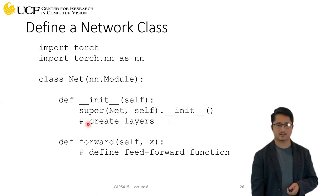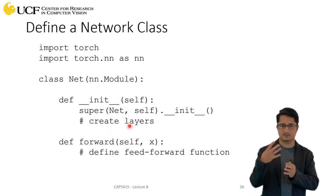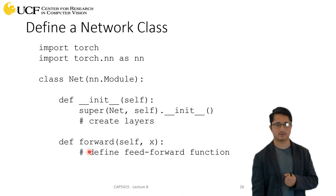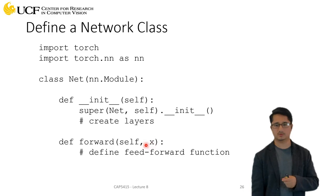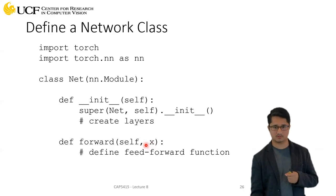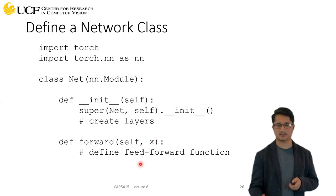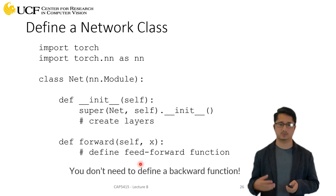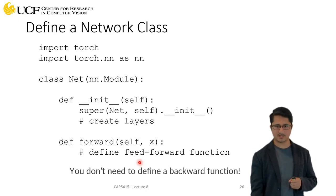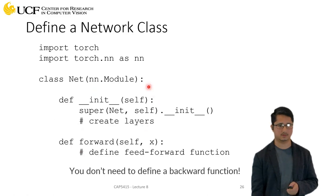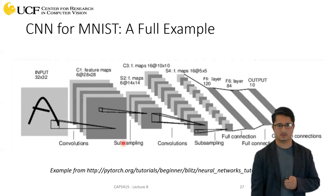In the initializer, define your layers, which will be used by the forward function. Define them first, then use them in forward. The forward function is mandatory — x is the input to your network. Below that, define what transformations you want to perform. You don't need to worry about the backward function. This is the bare minimum structure for any neural network architecture.